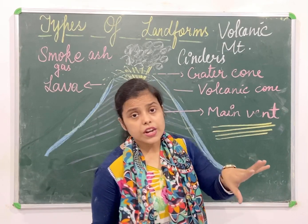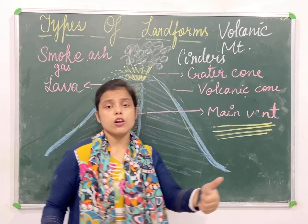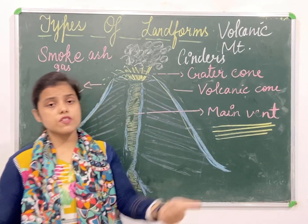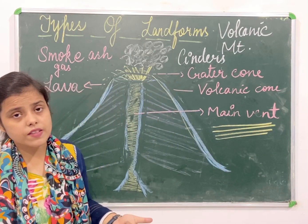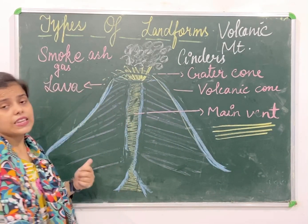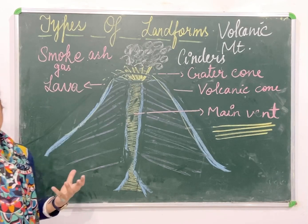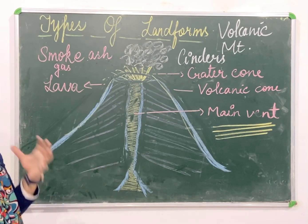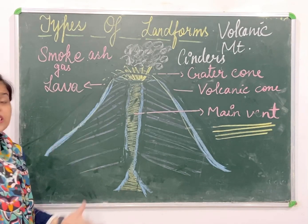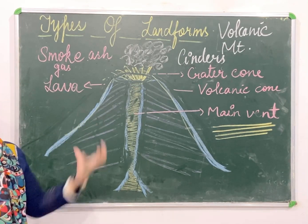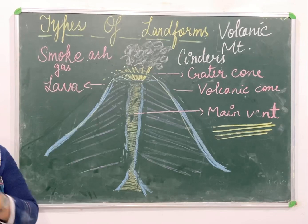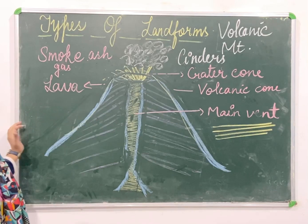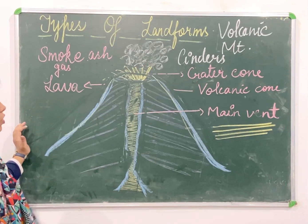Volcanoes are of three types: dormant volcano, extinct volcano, and active volcano.